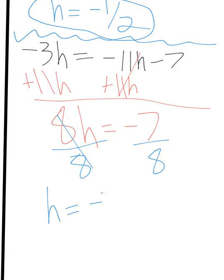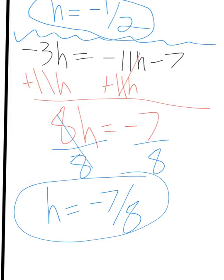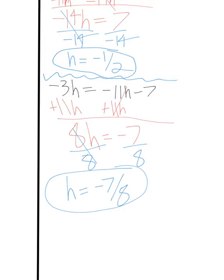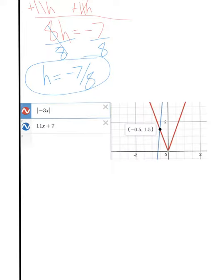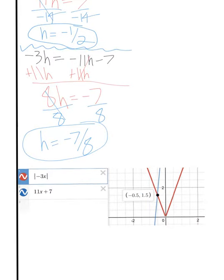So I have my two solutions. Let's look at the graph to see which one is extraneous. When I plug in the absolute value of negative 3X and then 11X plus 7, I get negative 0.5 from my solution. Negative 1 half is 0.5, and 7 over 8 is not 0.5, so that would mean this one is extraneous.